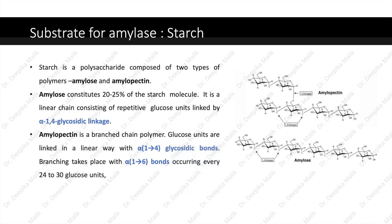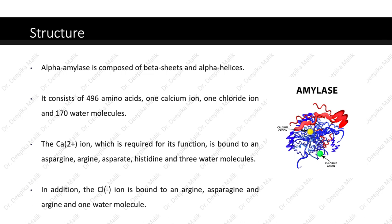It is a linear chain consisting of repetitive glucose units linked by alpha-1,4 glycosidic linkage. Amylopectin is a branched chain polymer. Glucose units are linked in a linear way with alpha-1,4 glycosidic bonds, and branching takes place with alpha-1,6 bonds occurring every 24 to 30 glucose units. The figure on the right side clearly shows the different linkages present in amylose and amylopectin.